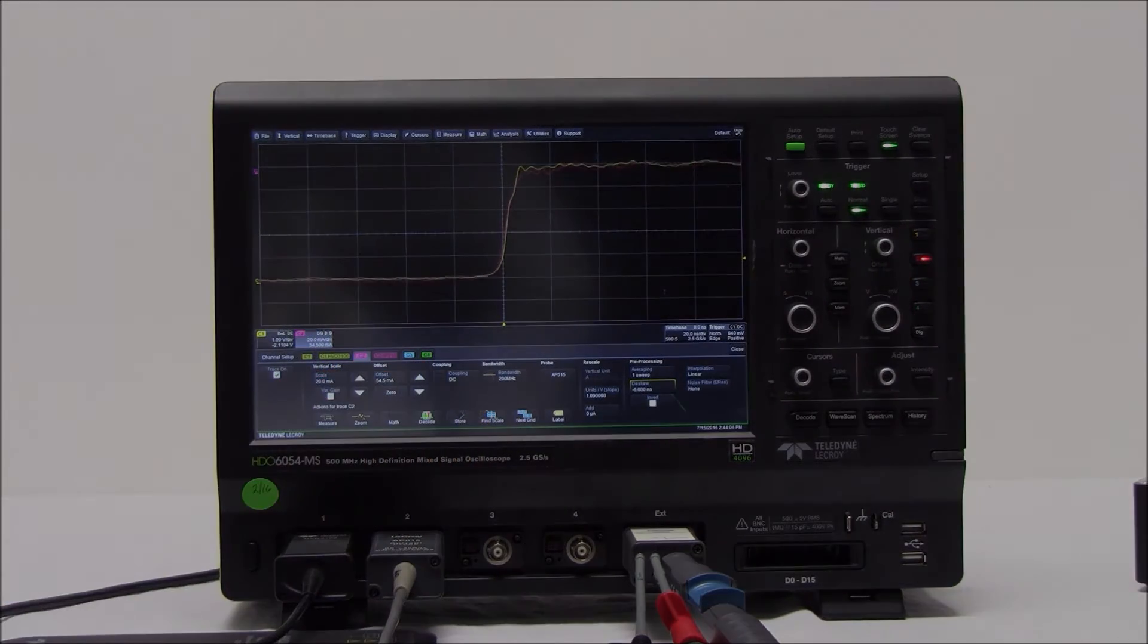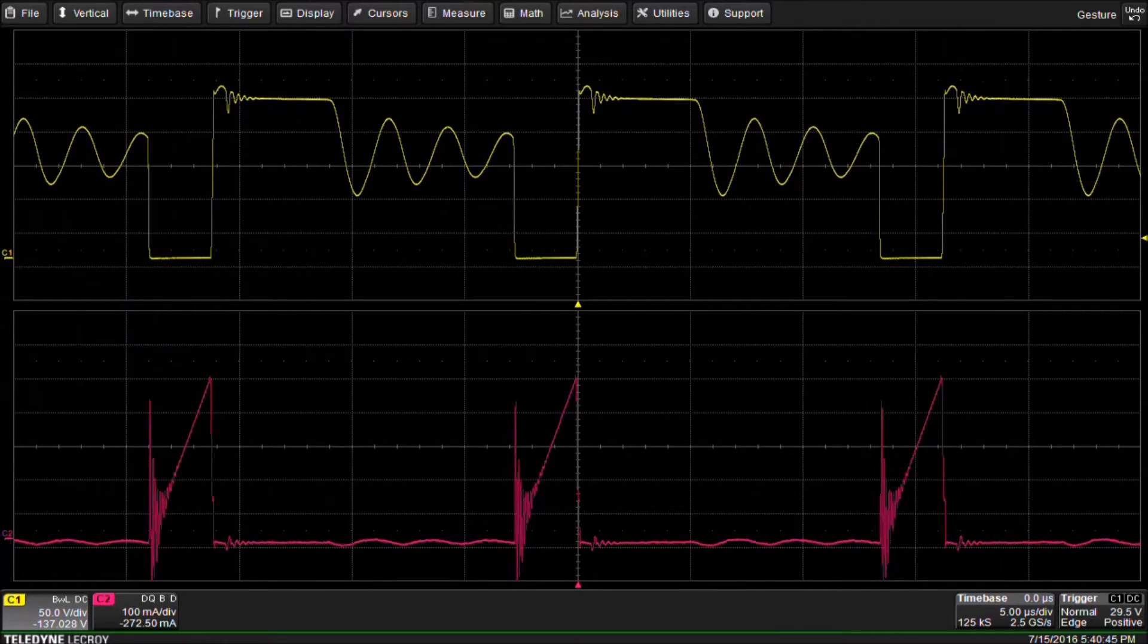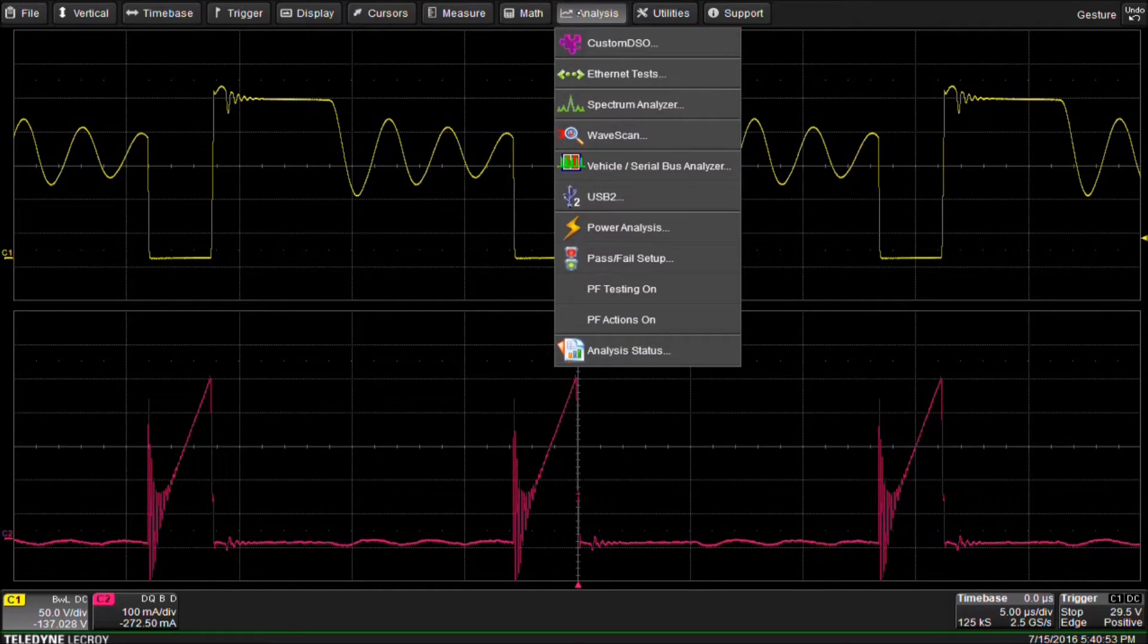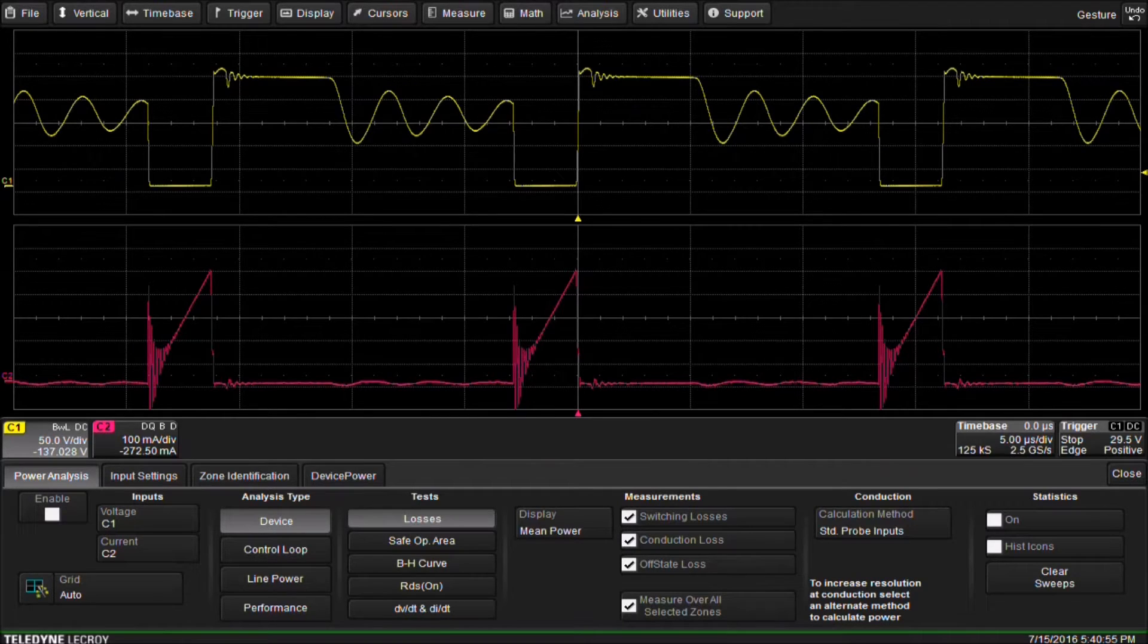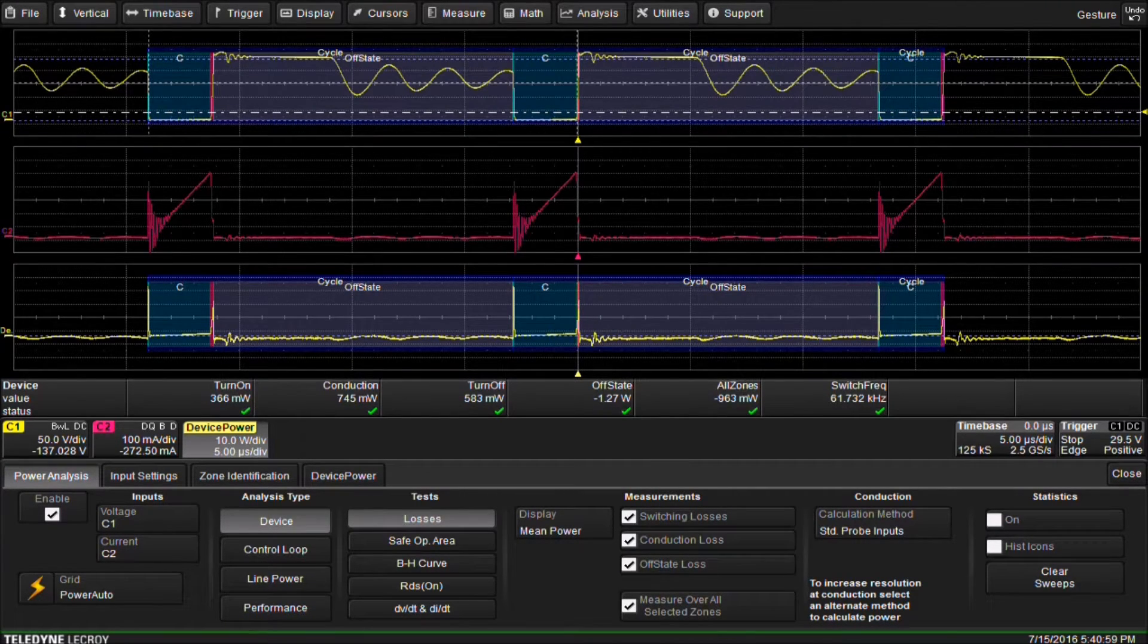Now we can connect our probes to our device under test. To set up the PWR software option for device loss measurements, we select Analysis and Power Analysis. We check Enable and make sure the analysis type is set to Device and Tests is set to Losses.